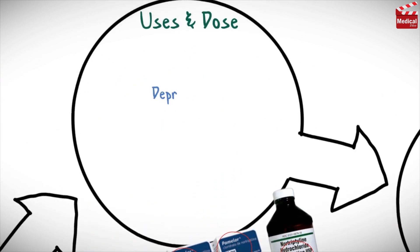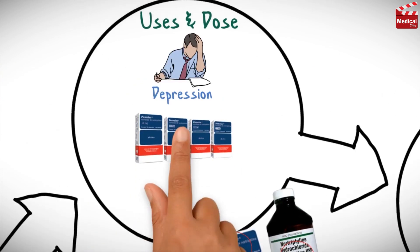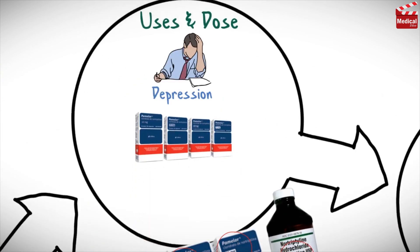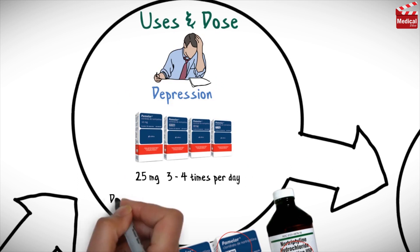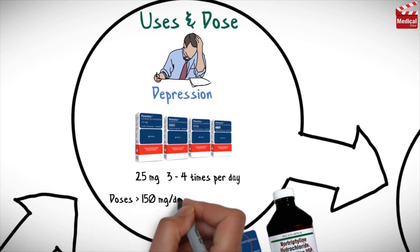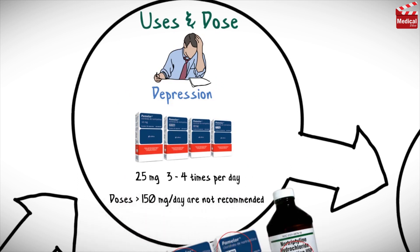Nortriptyline is used for depression. The usual dose for adults is 25 mg, 3 to 4 times per day. Doses above 150 mg per day are not recommended.